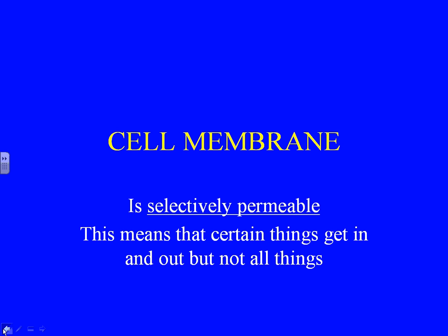Selectively permeable means that certain things get in and out, but not all things — the cell membrane sort of chooses what goes in and out. It doesn't really have a brain, so it's not making a true choice. Think of it like a classroom door: you and I can go in and out, but an elephant can't fit. In that way, the doorway is a selectively permeable entrance.